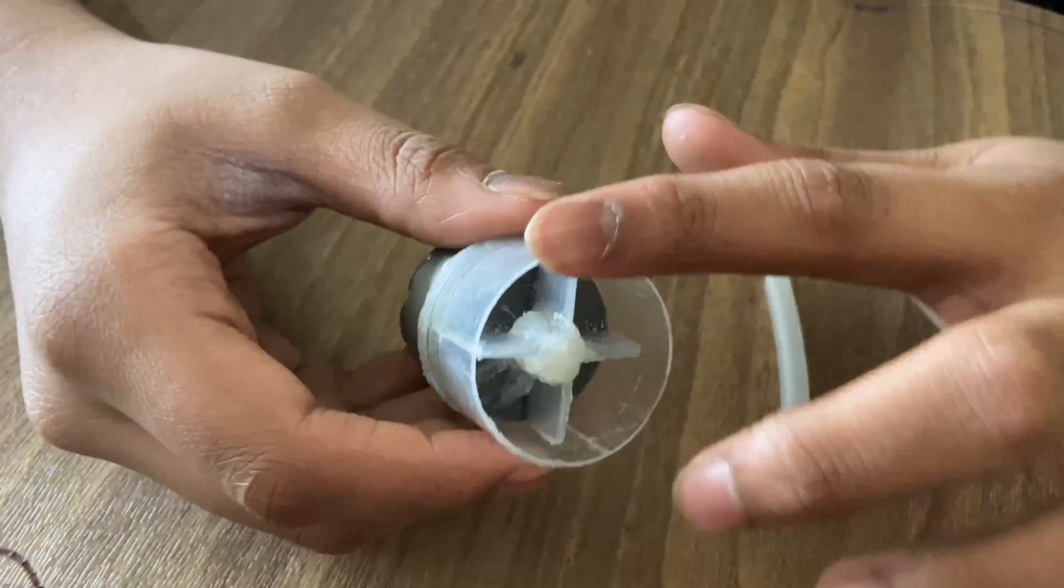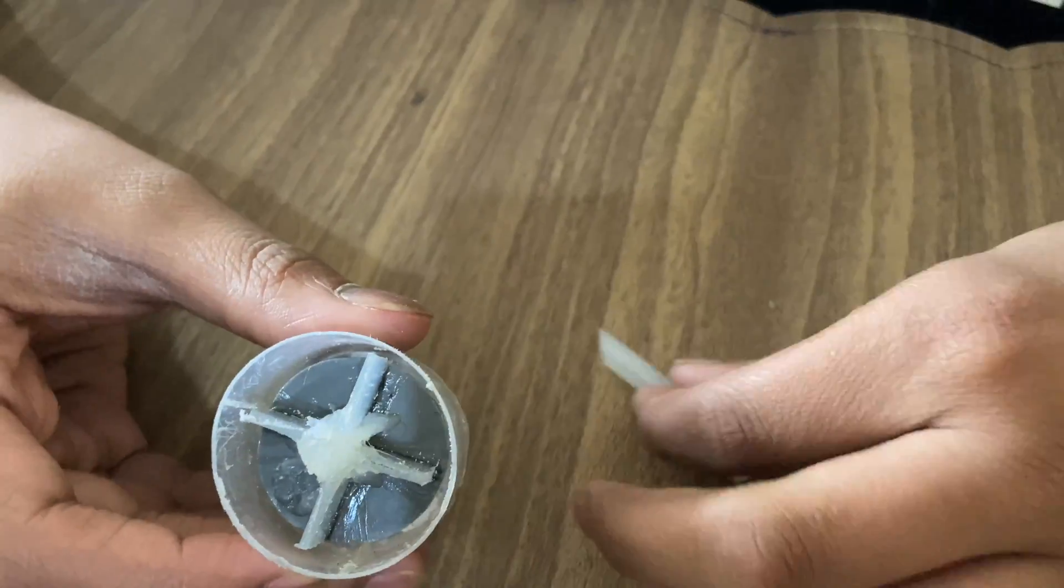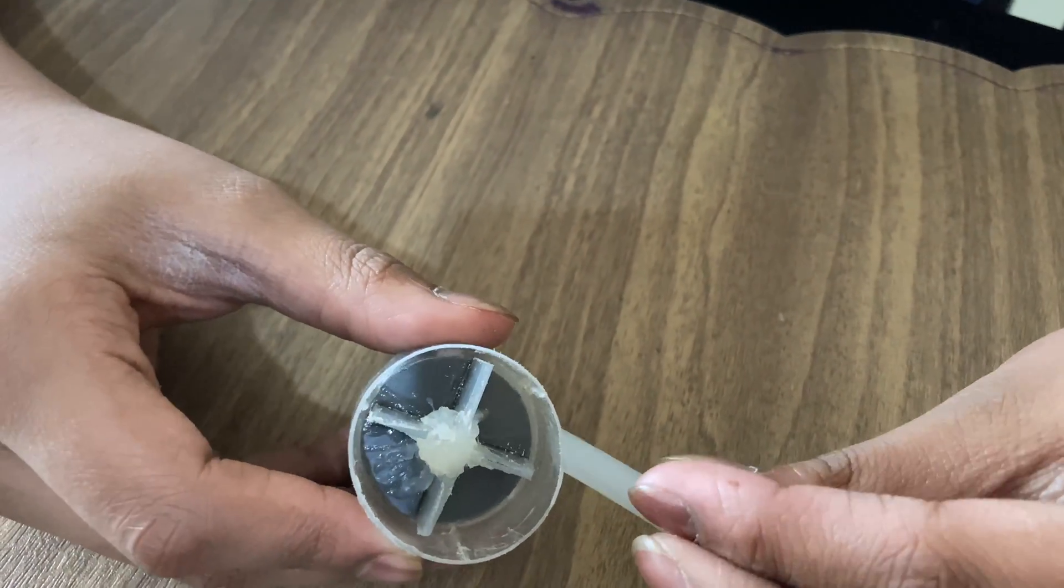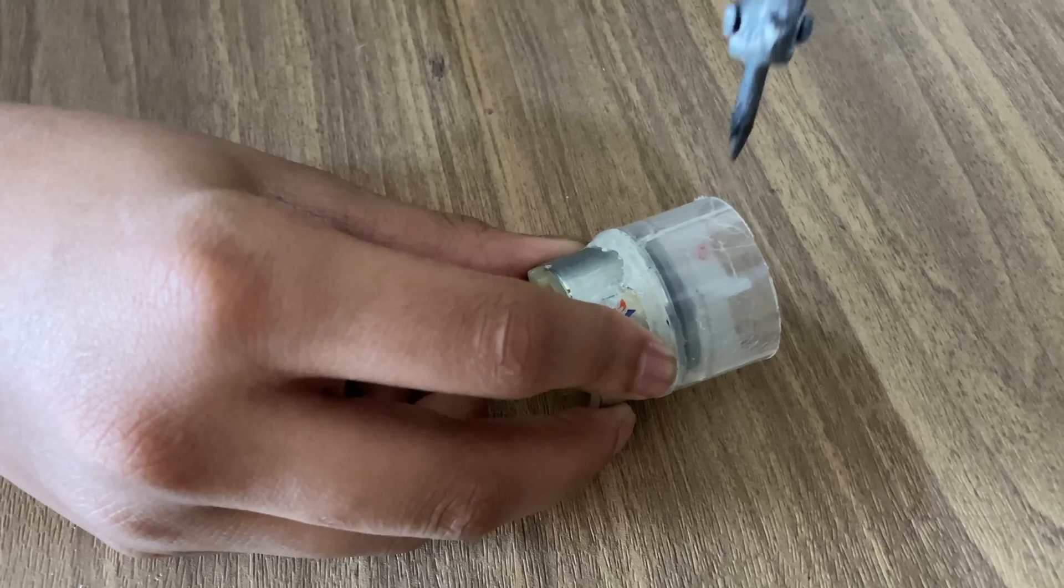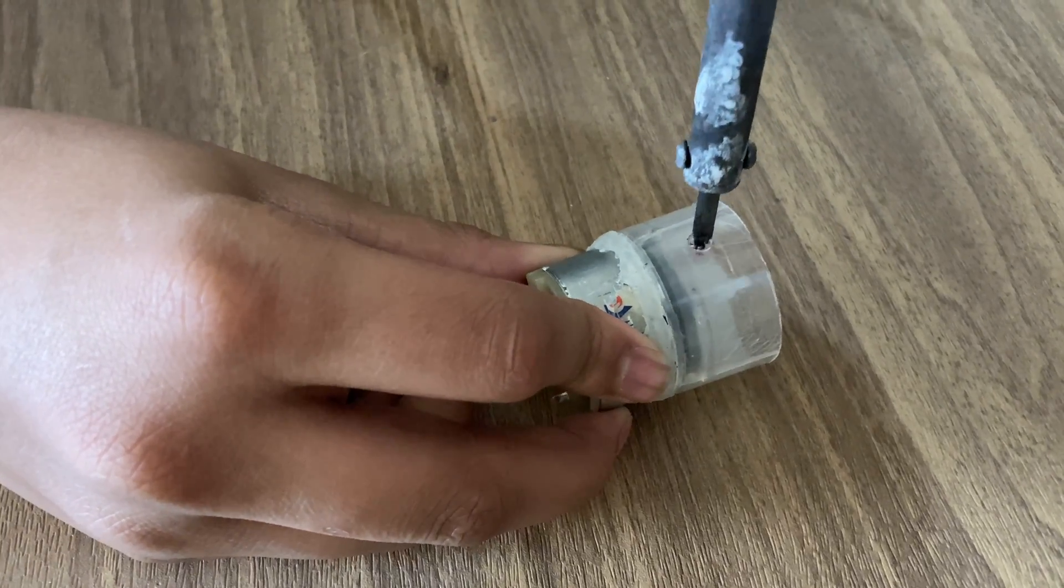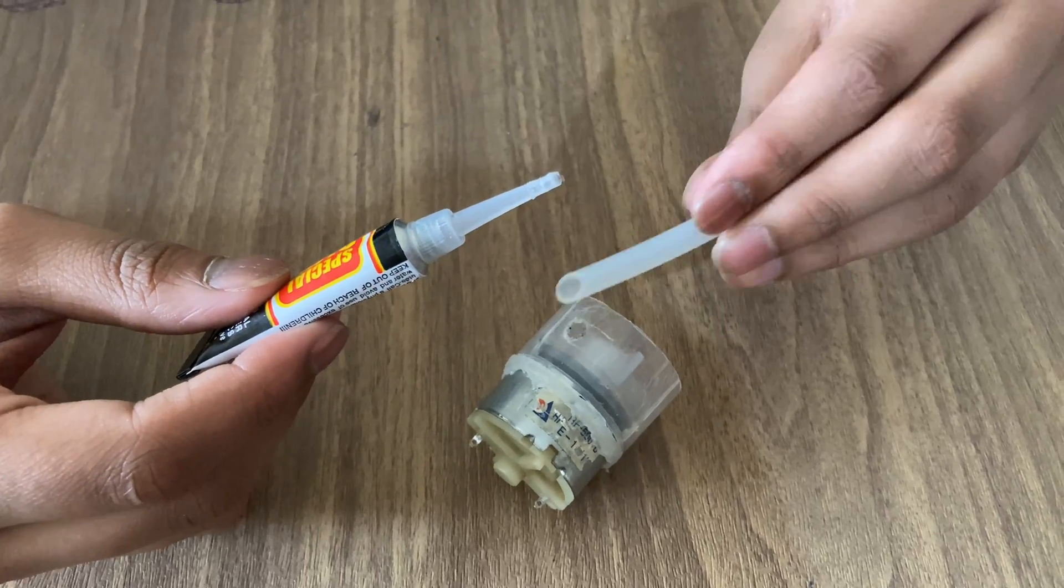So I've removed the extra part here. Now I'm going to make a hole to fix this pipe. I'm making the hole with the soldering iron. I'm going to stick this pipe here with super glue.